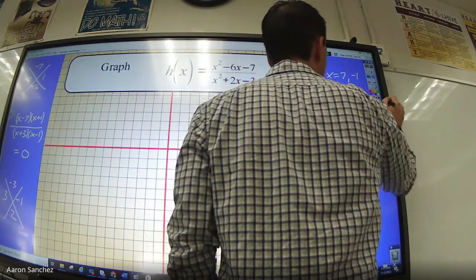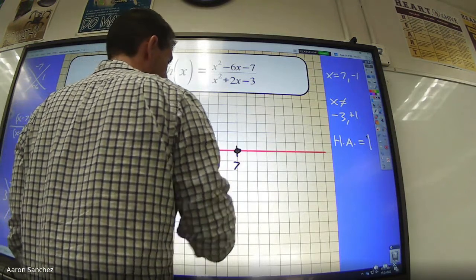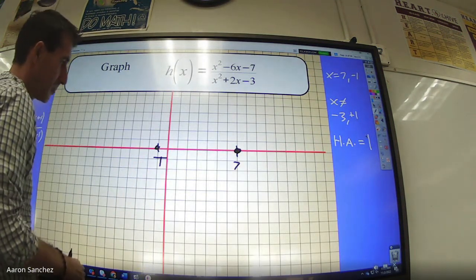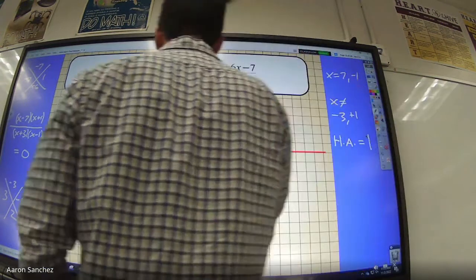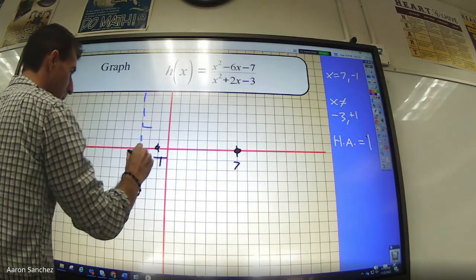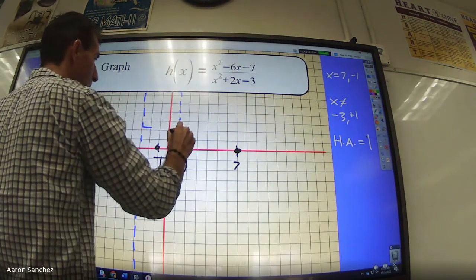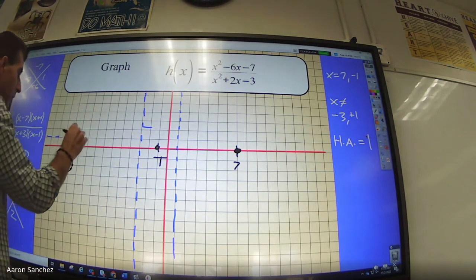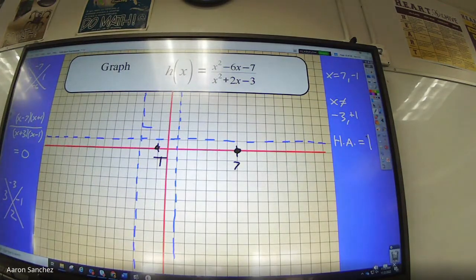Should I put my landmarks here? Let's go 1, 2, 3, 4, 5, 6, 7. I got 7 as an x-intercept. I got negative 1 as an x-intercept. I got negative 3, 1, 2, 3 on the other side. That is a vertical asymptote. I got positive 1 as a vertical asymptote. I got 1 as a horizontal asymptote.